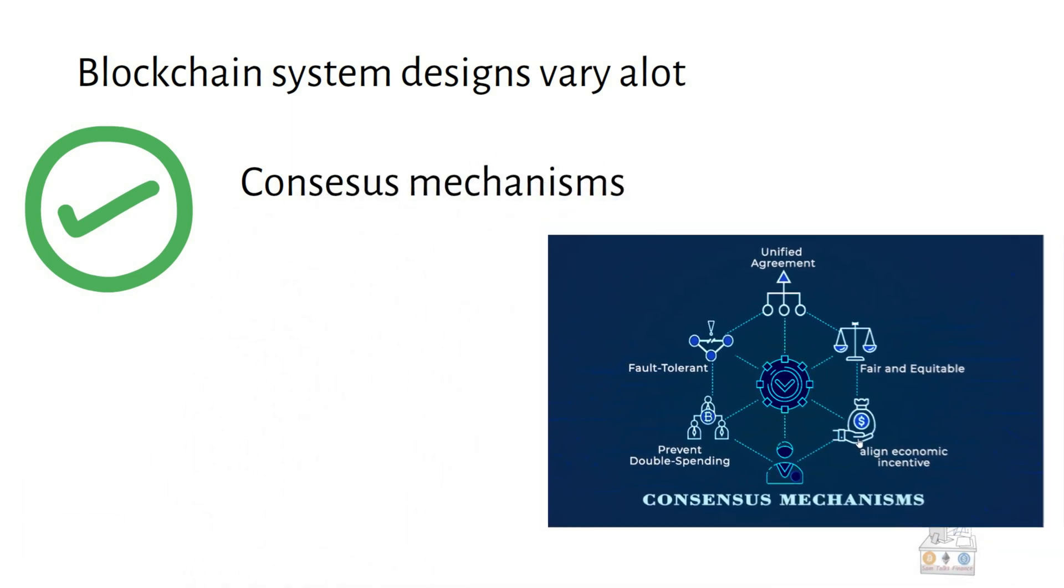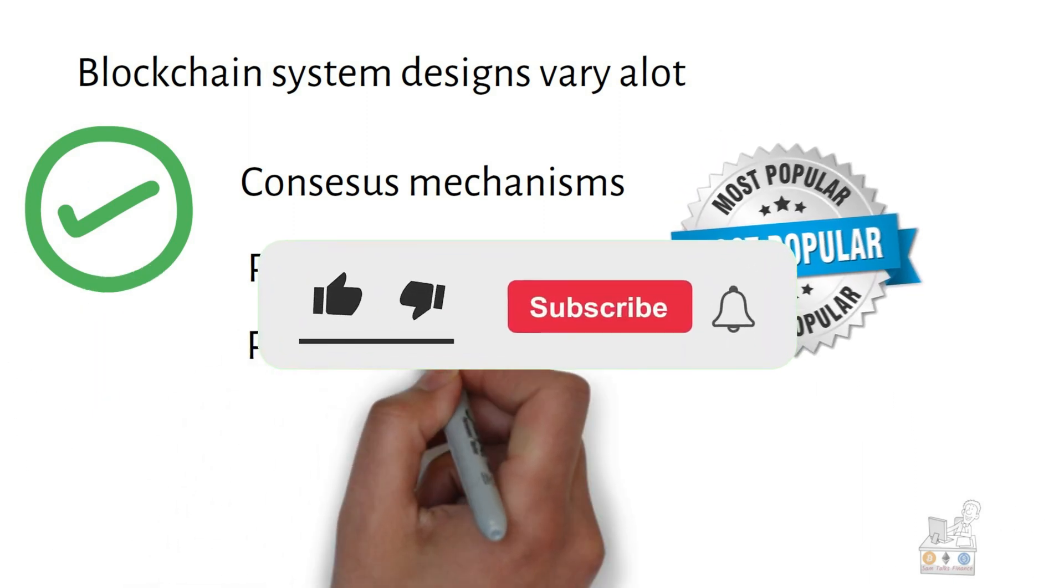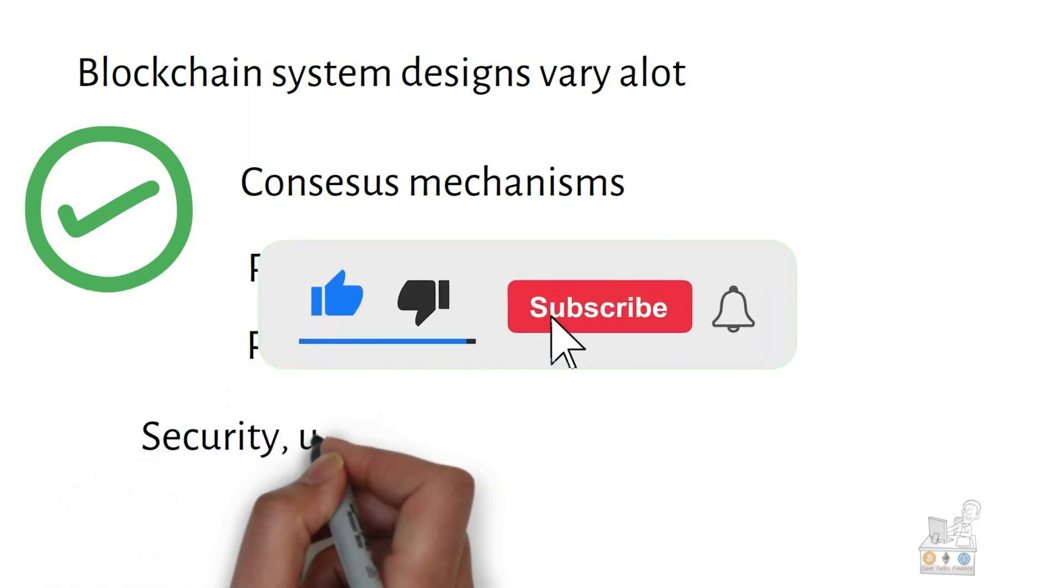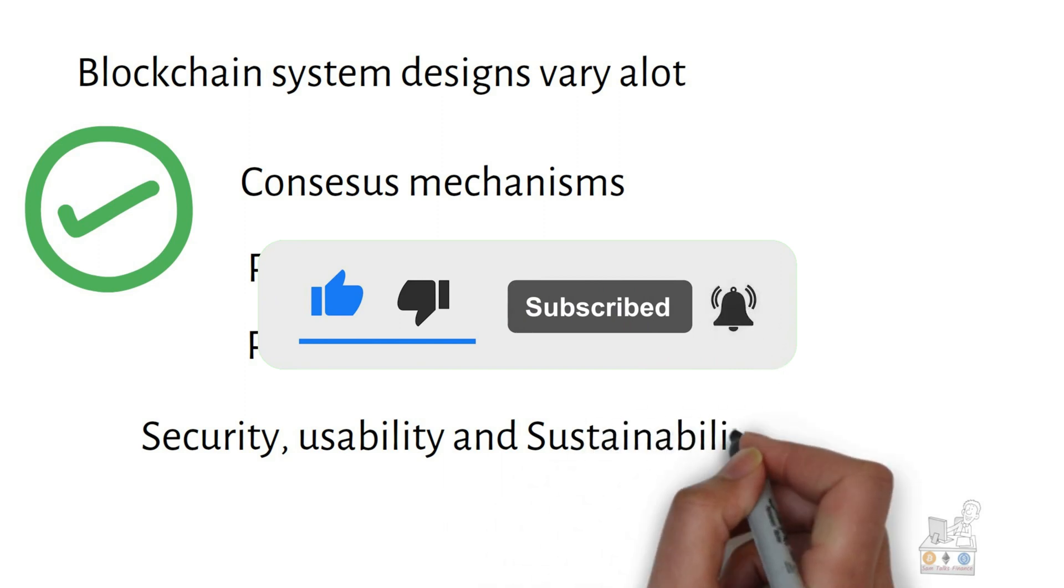Consensus mechanisms are very popular proof-of-work and proof-of-stake methods. The underlying blockchain security, usability, and scalability are different.